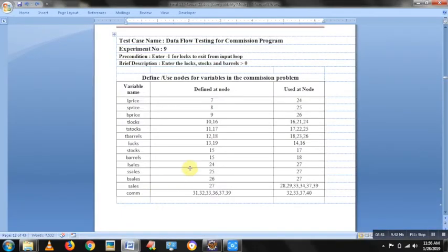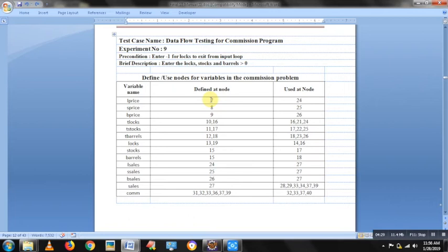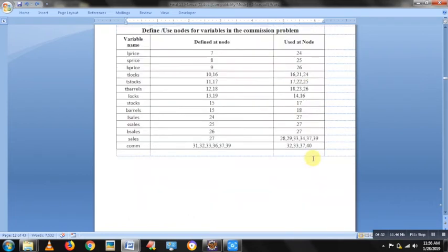So, after doing that, log price is defined at line number 7 and use that line number 24. Likewise, stock price is defined at 8 and used at 25. So, while I tabulate that, see total logs, it can be defined at 2 nodes. It is defined at 10 as well as 16. Also, it is defined at 16, 21 and 24. So, in data flow testing, once you identify the defining node and used node, next you should be able to list the path from 7 till 24. Now, the same has been done here.